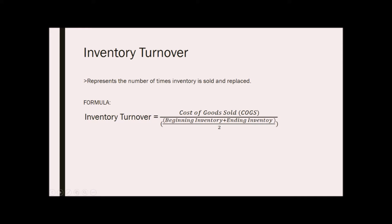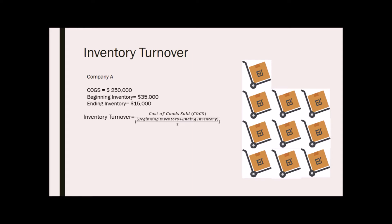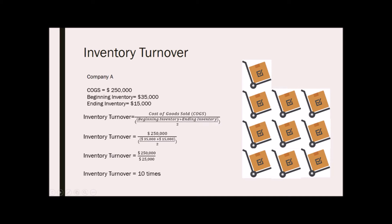Take note that some authors use sales in lieu of cost of goods sold in the formula. For example, Company A has cost of goods sold of $250,000, a beginning inventory of $35,000, and an ending inventory of $15,000. To compute for the inventory turnover, we divide $250,000 over the average of the beginning and ending inventory — that is $250,000 over $25,000 — and we get the answer of 10 times.